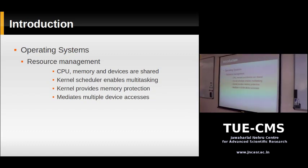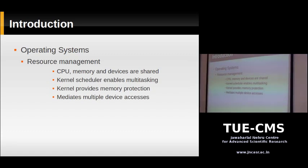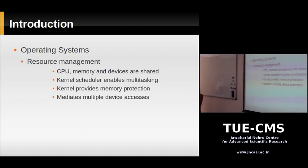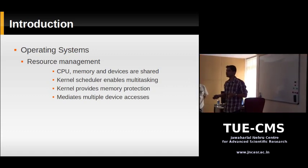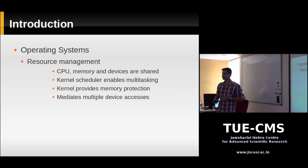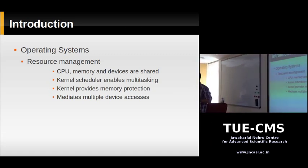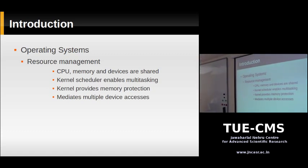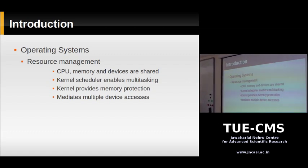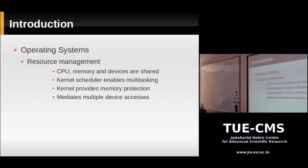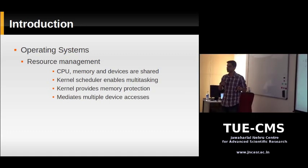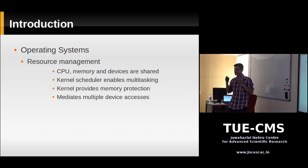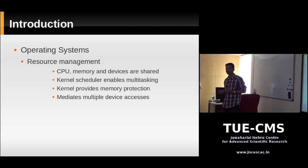Another job of the OS is resource management. You'll be running more than one application on your computer — like a Word document open in one window and a browser in another. But there's only one CPU, maybe one or two cores. So how does a computer manage to juggle all these applications running simultaneously? This is done by the operating system — it gives a small amount of time to each application, quickly switching between them, giving you the illusion that your computer is running many applications simultaneously.